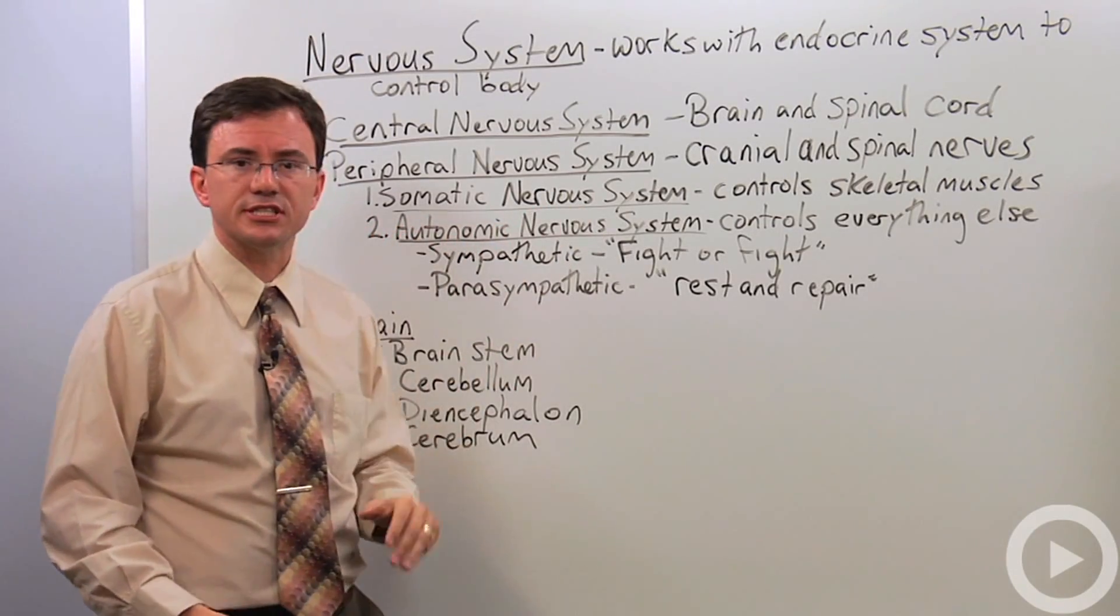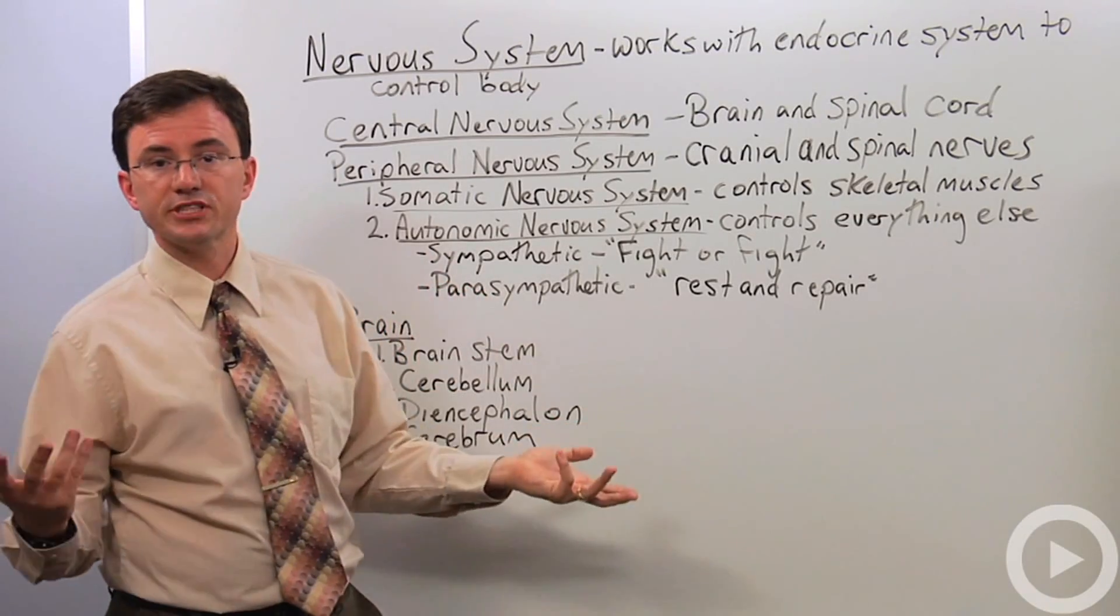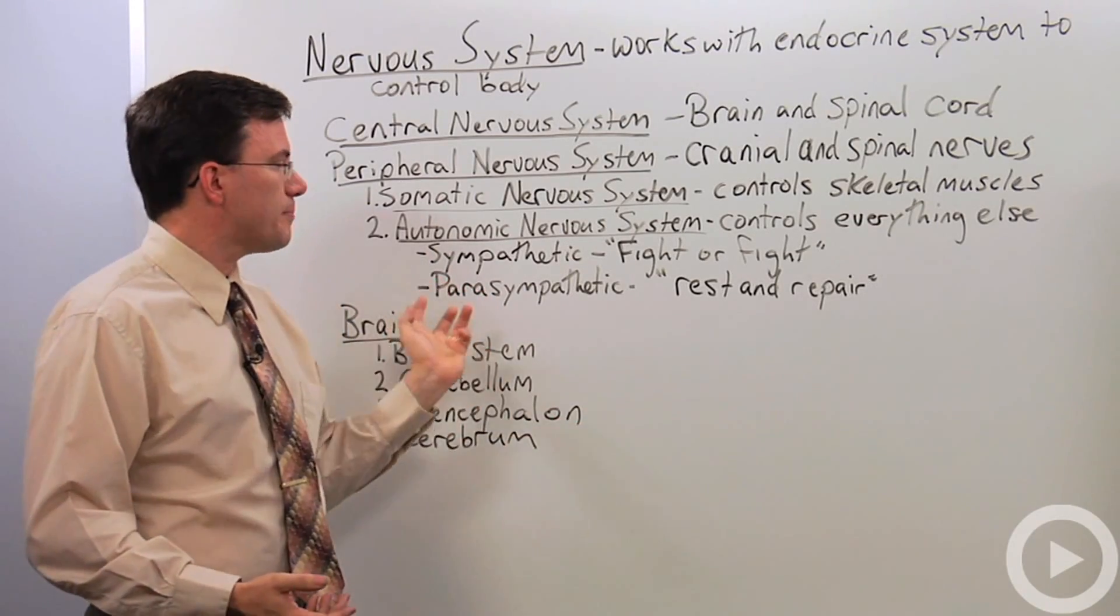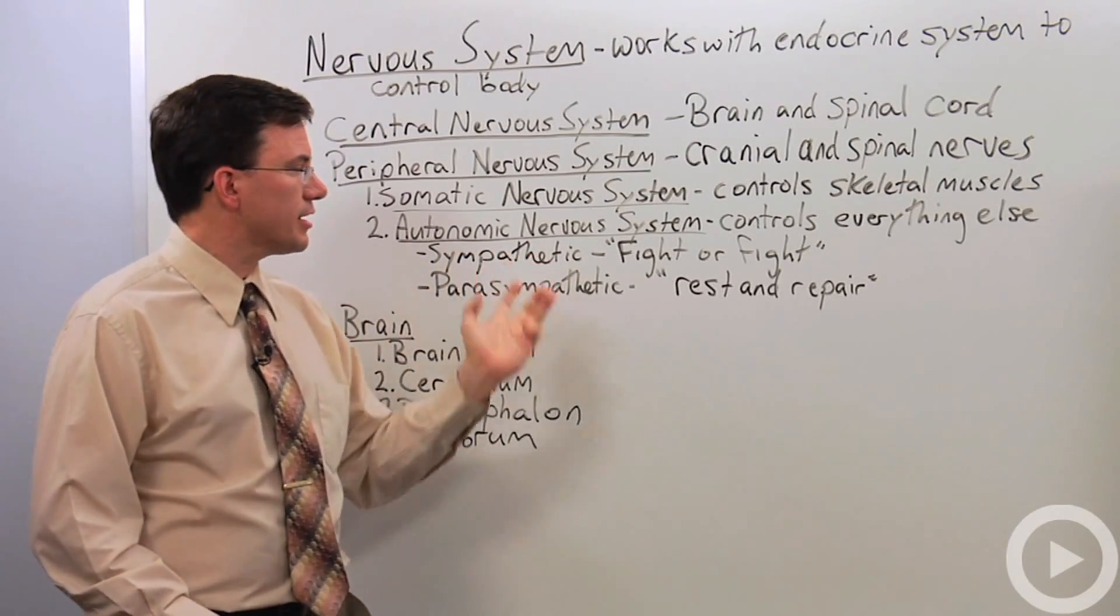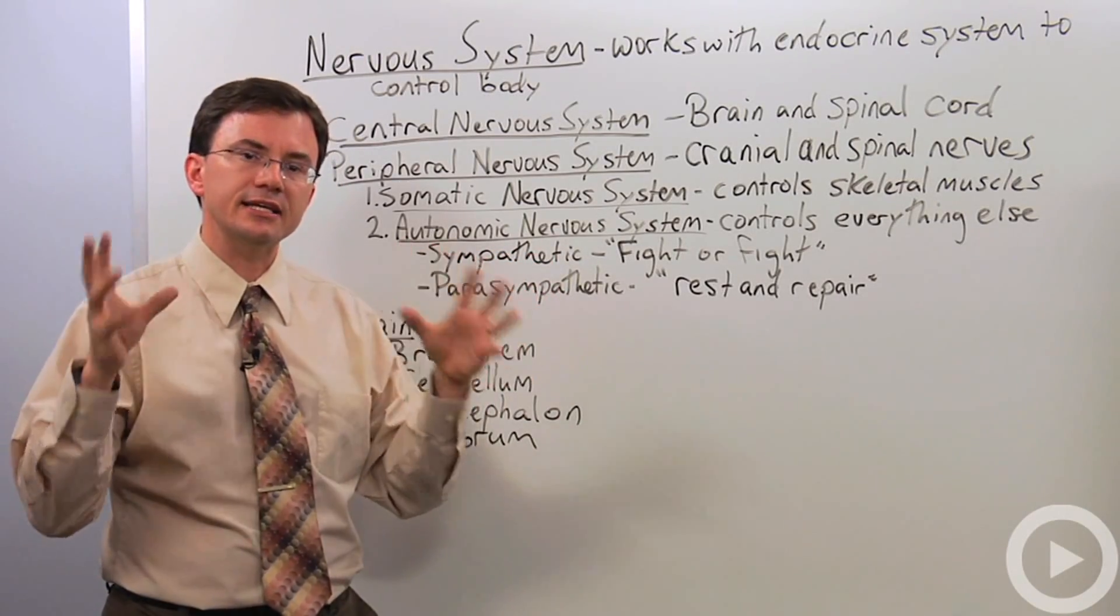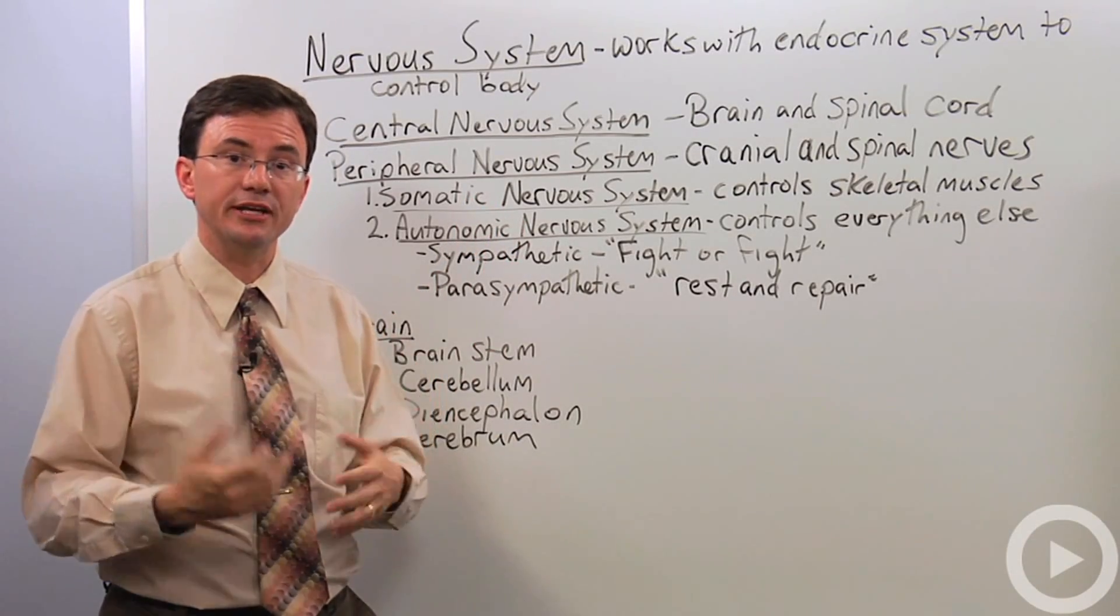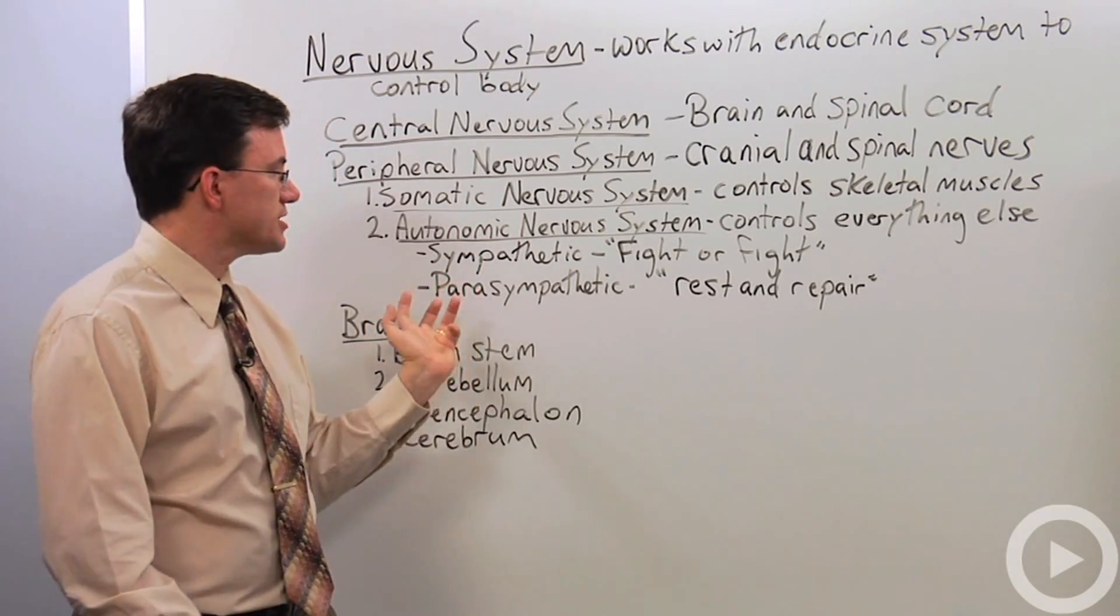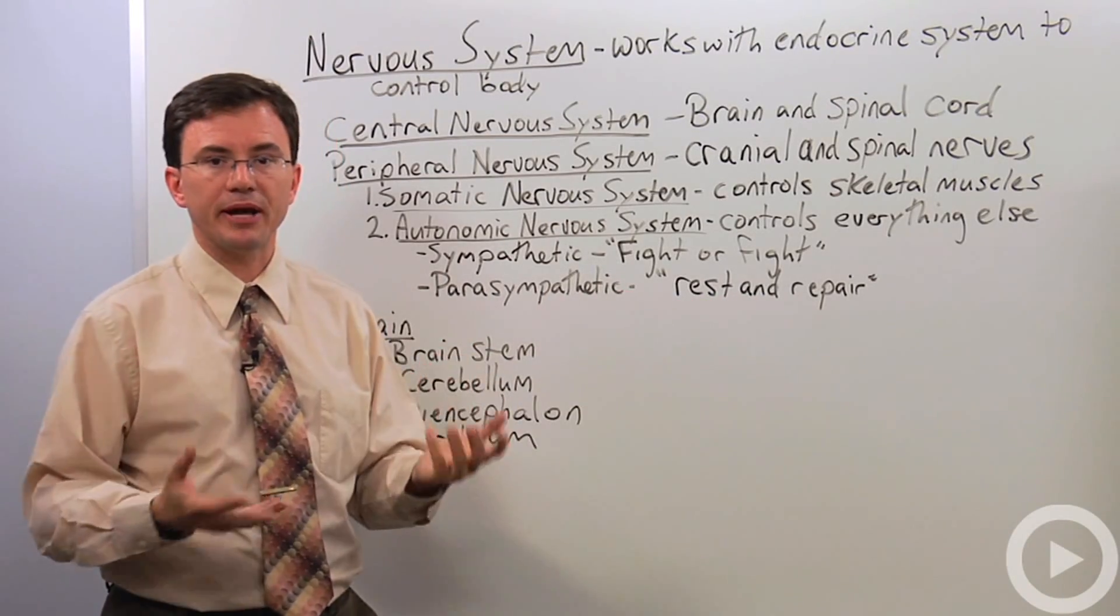Now within the autonomic nervous system, there's further subdivision. There's the sympathetic nervous division or nervous system and the parasympathetic nervous system or nervous division. Now the sympathetic division, in general, you can lump that together as it controls the fight or flight type responses. In other words, getting you ready for action. Whereas the parasympathetic nervous division, in general, gets you ready for resting and repairing.